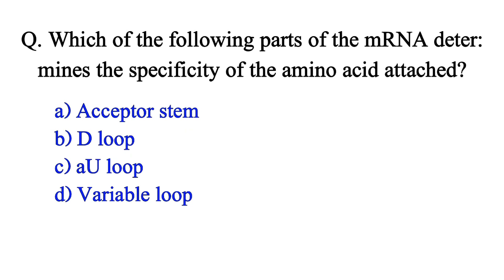Which of the following parts of the messenger RNA determines the specificity of the amino acid attached? Option A: acceptor stem. Option B: D loop. Option C: AU loop. Option D: variable loop. The correct answer is Option A: acceptor stem.